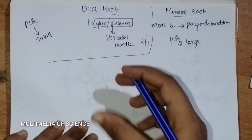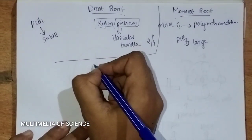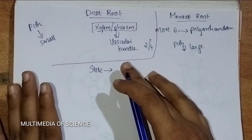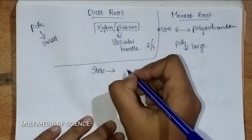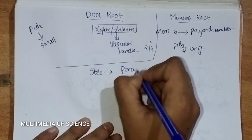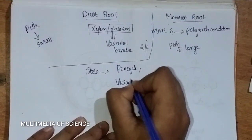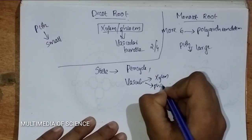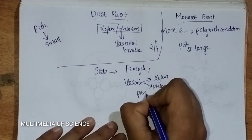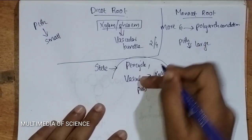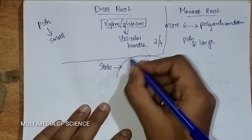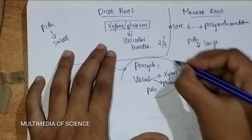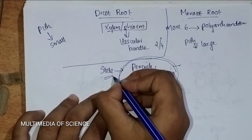There is a structure named as stele. Stele means all tissues on the inner side of endodermis — such as pericycle, vascular bundle (which includes xylem and phloem), and pith. So pericycle, vascular bundle, and pith which are inner to the endodermis — this whole constitute is named as stele.